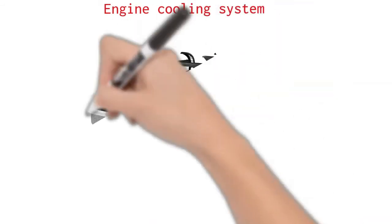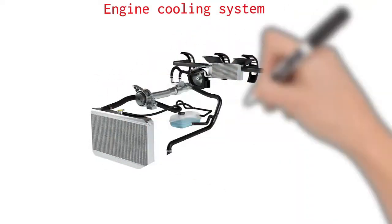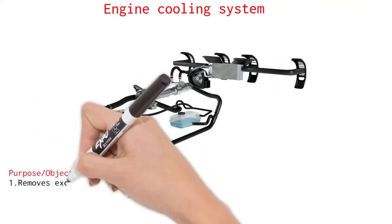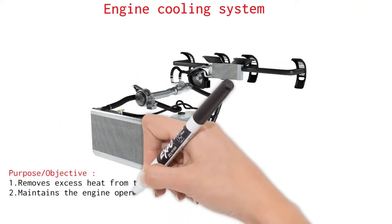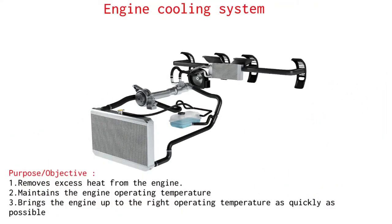Engine cooling system. The cooling system serves mainly three important functions. First, it removes excess heat from the engine. Second, it maintains the engine operating temperature where it works most efficiently. And finally, it brings the engine up to the right operating temperature as quickly as possible.